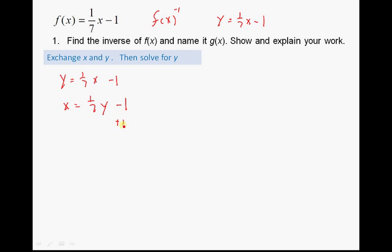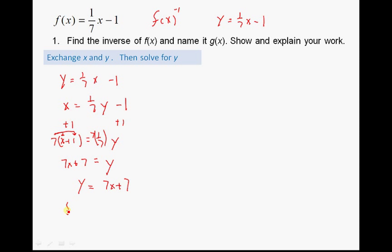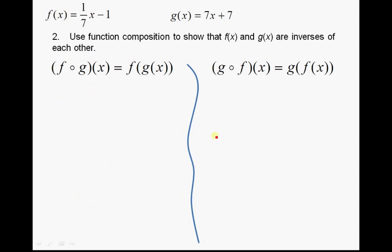After exchanging x and y, we get x = (1/7)y - 1. Now we solve for y. Add 1 to both sides: x + 1 = (1/7)y. Then multiply both sides by 7, using the distributive property: 7x + 7 = y, since 7 × (1/7) = 1. So y = 7x + 7. This is our inverse, and since we've been told to name it g(x), we write g(x) = 7x + 7.